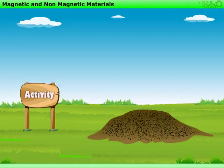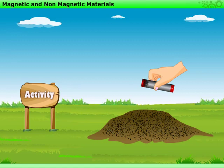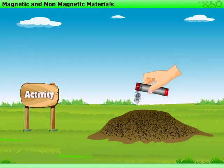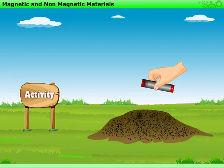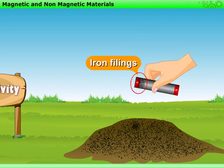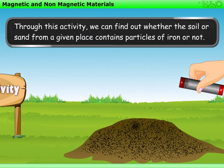Now, let us perform an interesting activity. Rub a magnet in the sand or soil, then pull out the magnet. You will find some particles of sand or soil stuck to the magnet. Gently shake the magnet to remove the particles of sand or soil. If some particles remain stuck to the magnet, these are small pieces of iron called iron filings picked up from the sand or soil. Through this activity, we can find out whether soil or sand from a given place contains particles of iron or not.